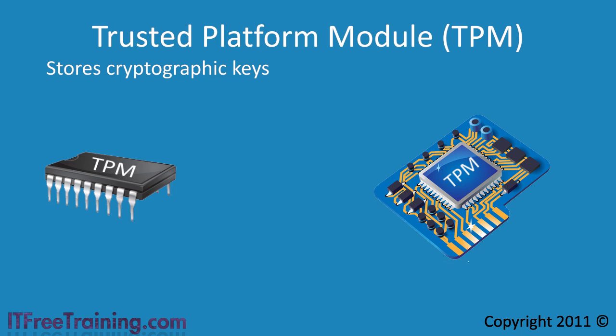The TPM chip stores cryptographic keys, but you can also get BitLocker to work without a TPM. For example, you could store the keys on a USB key instead. When you boot the computer, you simply need to insert the USB key on startup. Once the system has booted, you can remove the USB key and put it in a safe place.